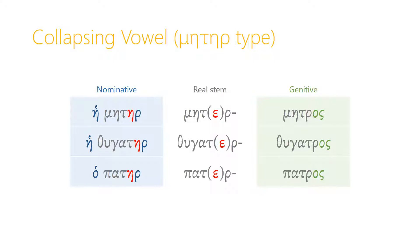A similar noun is he-thugater, daughter, and the stem again is thugater with a short epsilon that sometimes drops out, as in the genitive, so the genitive form is thugatros. Similarly, ha-pater — the real stem is pater, and the genitive form is patros.